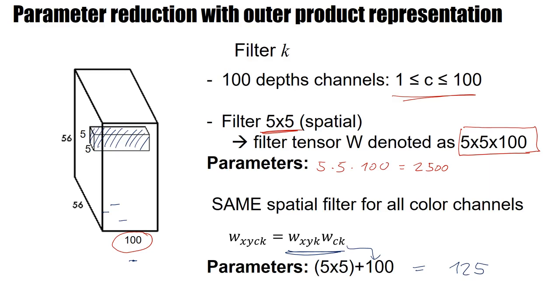In summary, this outer product representation is a very efficient compression of the number of parameters. And of course, this brings in a bias. This says that across all these different, across all these 100 depth channels, it's useful to work with the same filter.